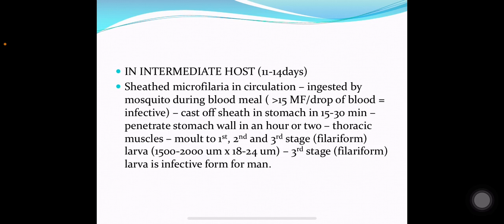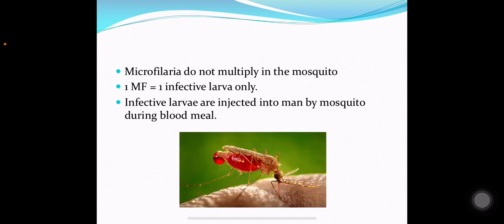In the intermediate host, the life cycle lasts about 11 to 14 days. The sheathed microfilaria in the circulation of man are ingested by the mosquito during the blood meal. Greater than 15 microfilaria per drop of blood is infectious for the mosquito. They cast off their sheath in the stomach of the mosquito in about 15 to 30 minutes, penetrate the stomach wall, and in an hour or two reach the thoracic muscles. They molt into 1st, 2nd, and then 3rd stage or filariform larvae, which are 1500 to 2000 micrometers long. The 3rd stage filariform larvae is the infective form for man. Microfilaria do not multiply in the mosquito — 1 microfilaria equals 1 infective larva only.